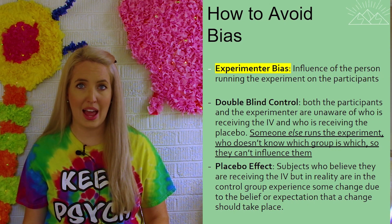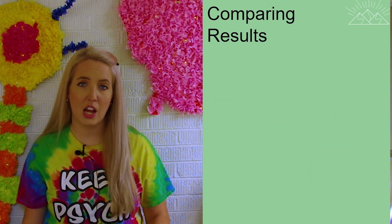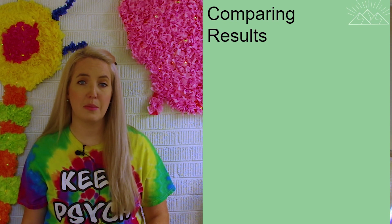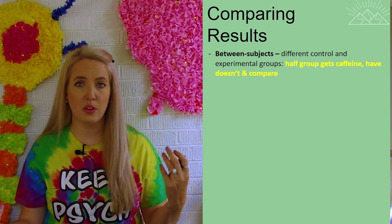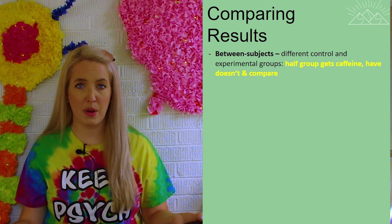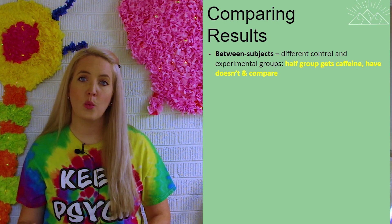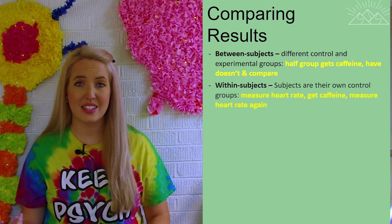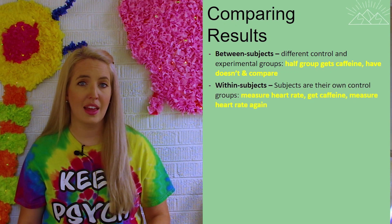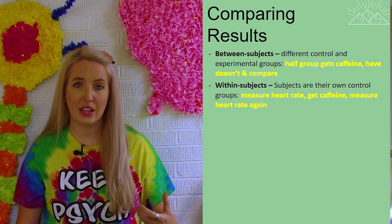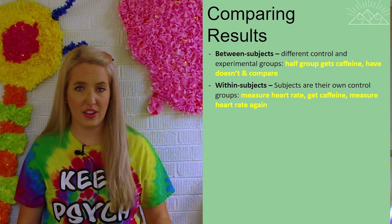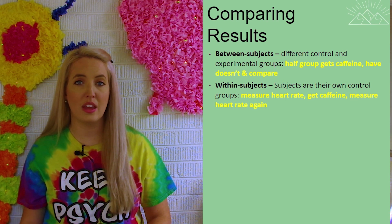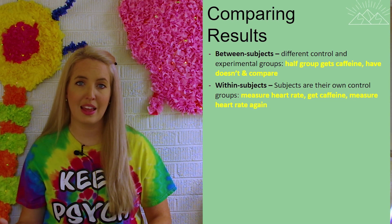At the end of the experiment we need to compare the results, and we can do this in a couple of different ways. We could do what's known as a between-subject design, which is what we've been describing: one group gets the independent variable, one group gets a placebo, and we compare their heart rates at the end. We could also use the same group twice — giving the same individuals a placebo on one day and the caffeine on a second day — and see if their heart rate goes up on the day they receive the caffeine. This is referred to as a within-group design, where the same group serves as both the experimental group and the control group.